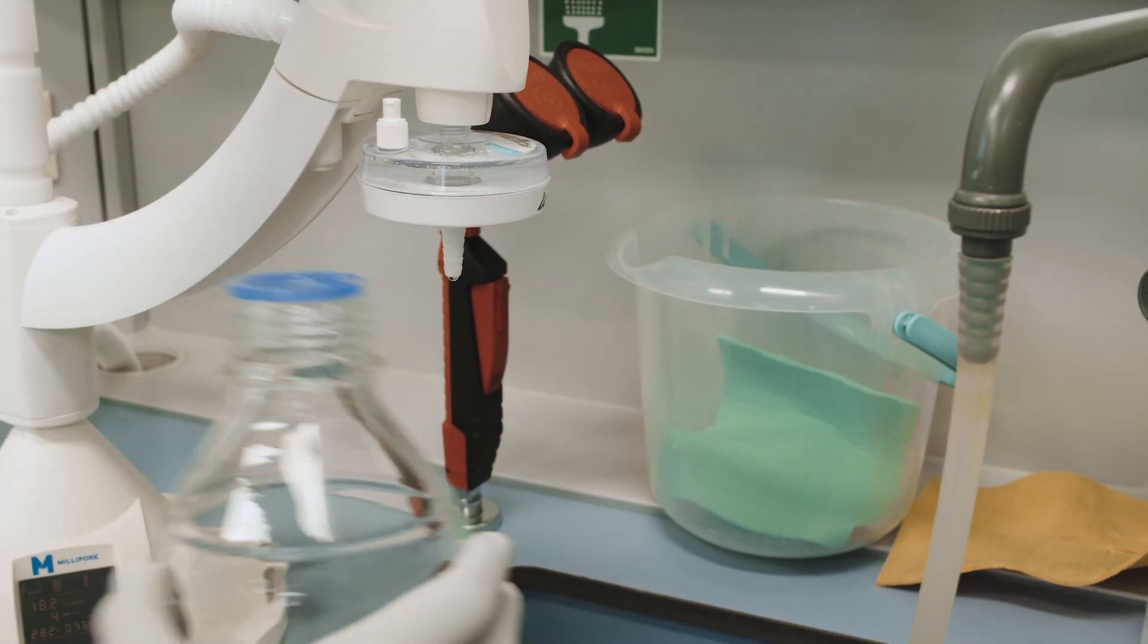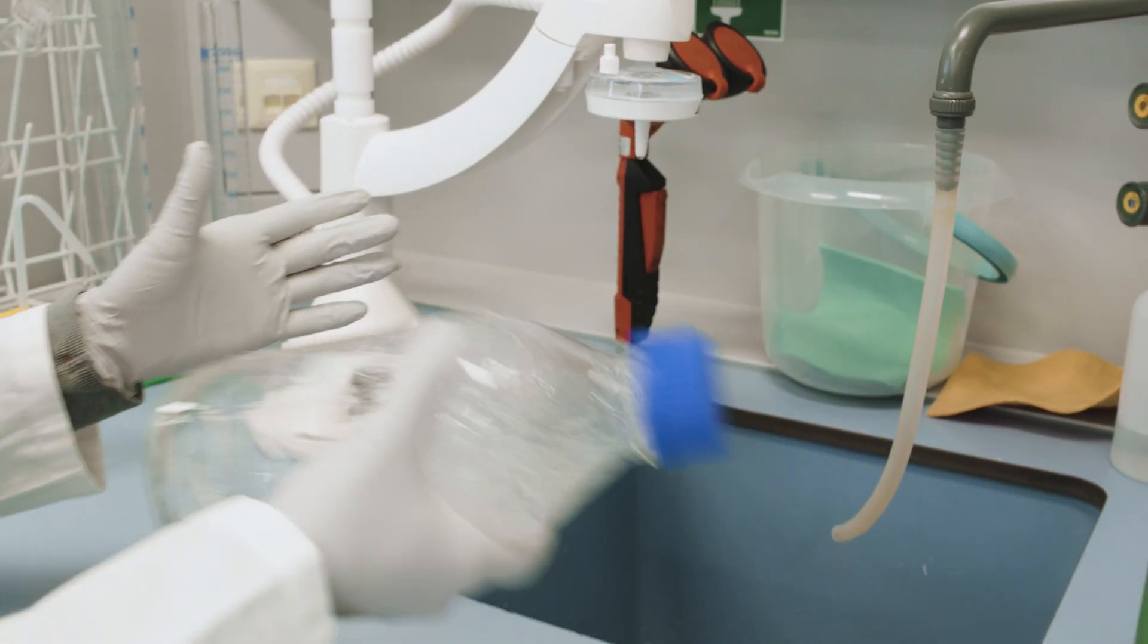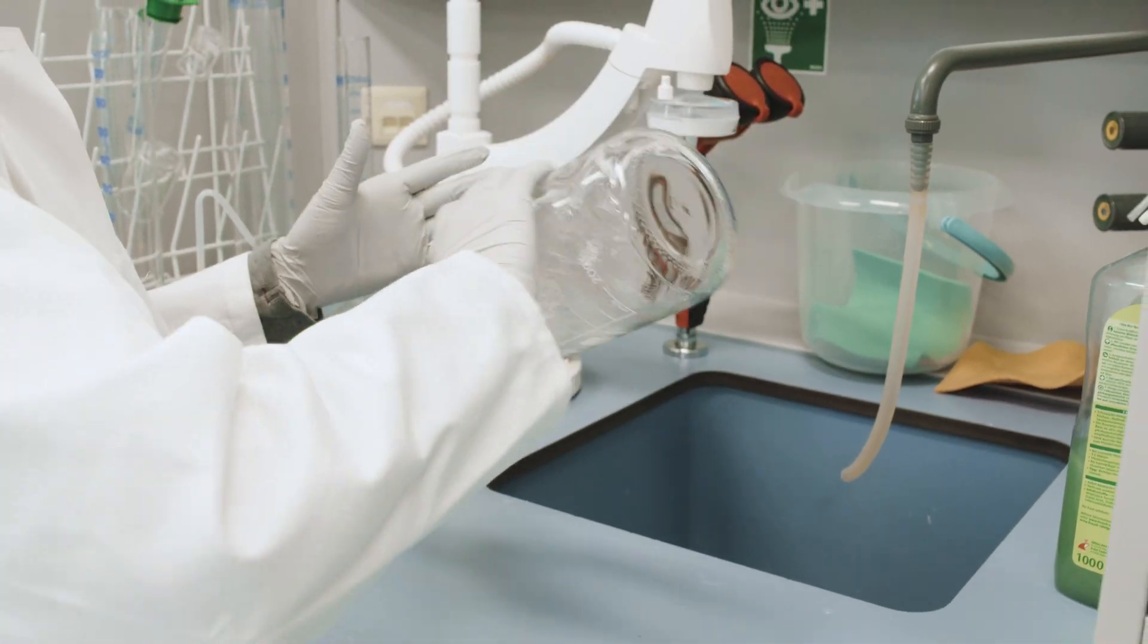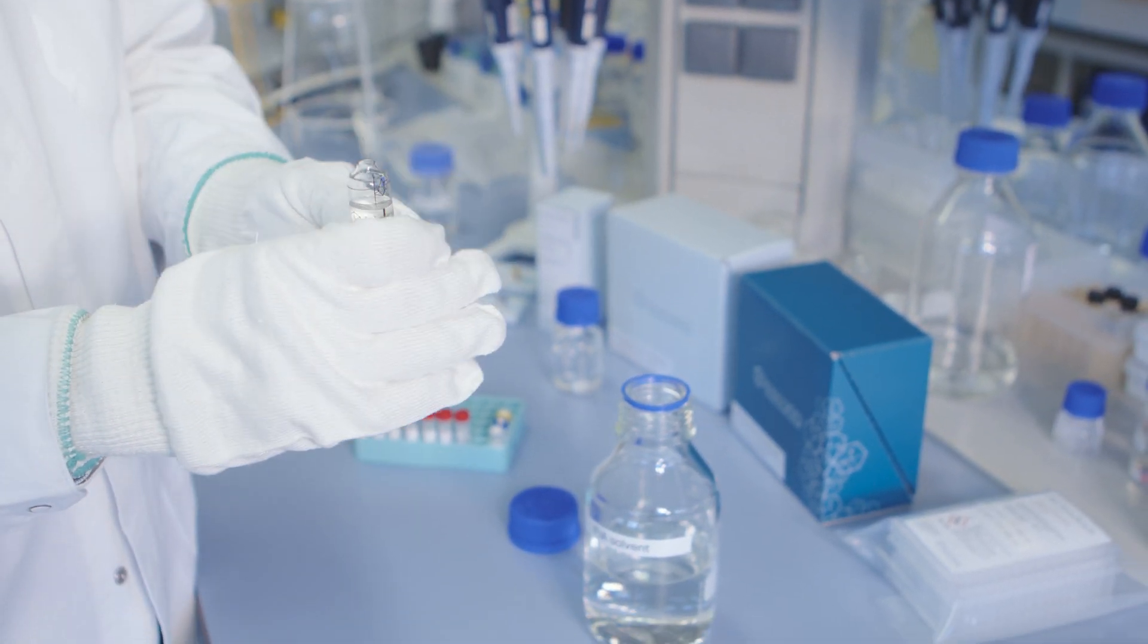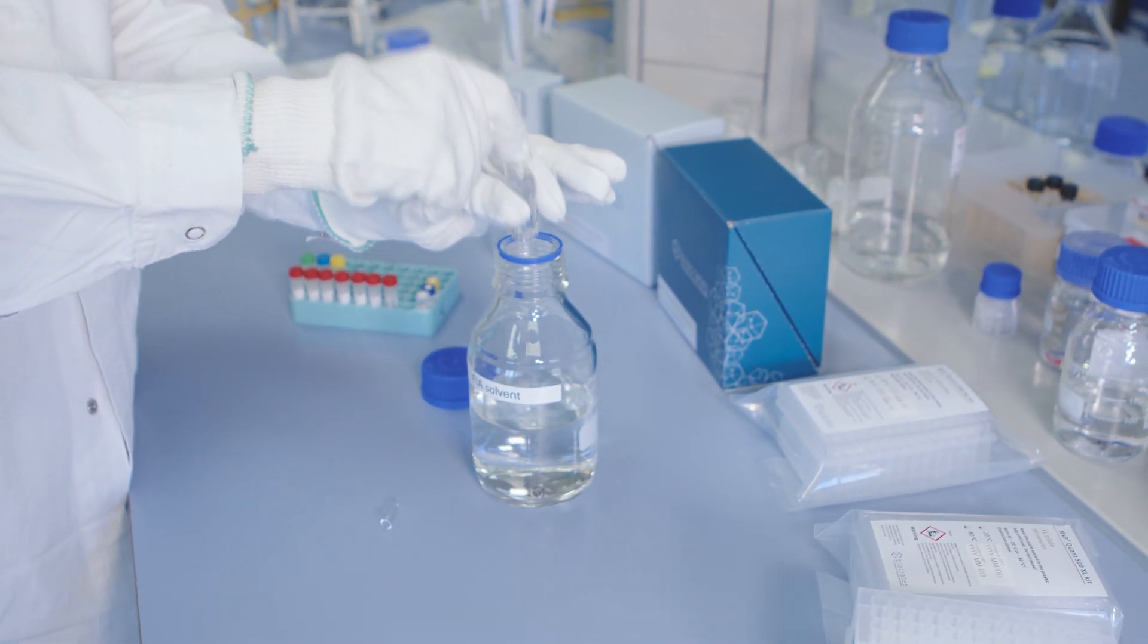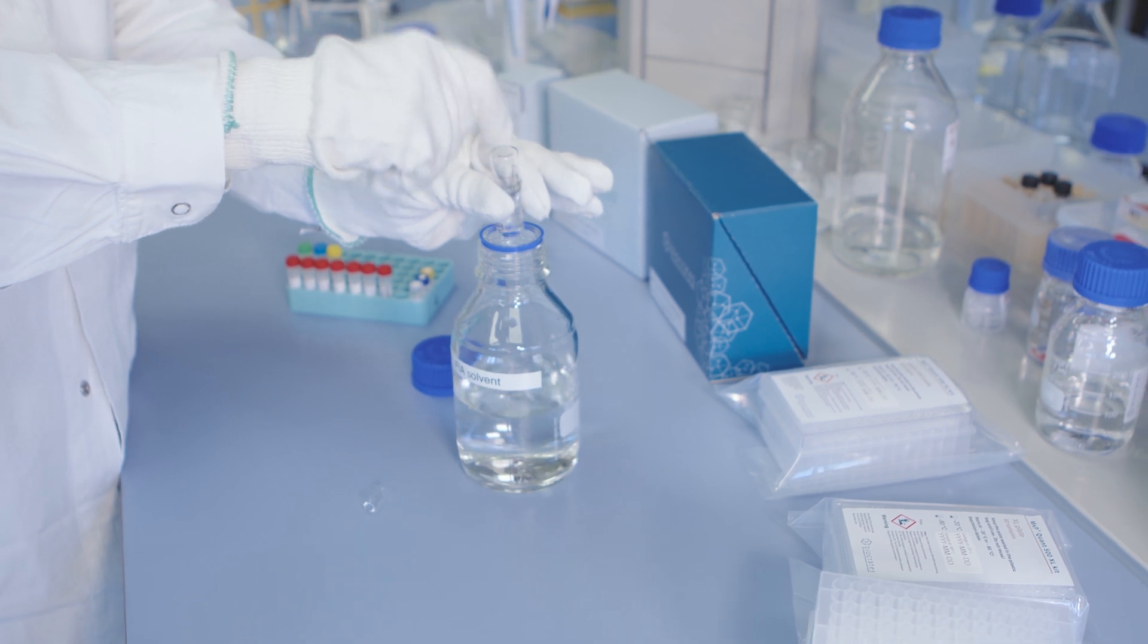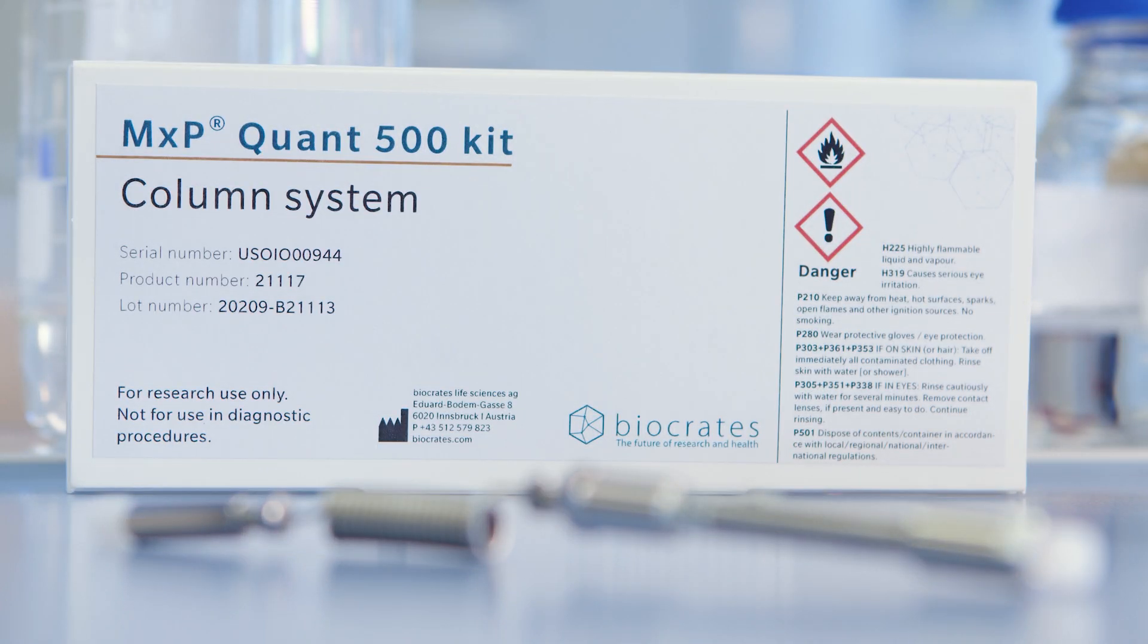Rinse all solvent bottles before use with at least water, isopropanol, methanol, and finally the main component of the solvent. Prepare all solvents A, B, extraction solvent, wash solvent, and FIA solvent as described in the user manual. Afterward, install the solvents at the MS platform. Before starting with the kit, make sure that you have received an appropriate column as specified in the kit requirements document.